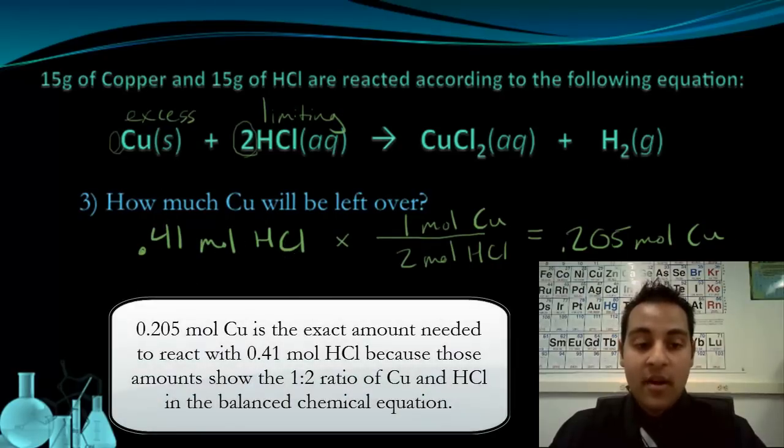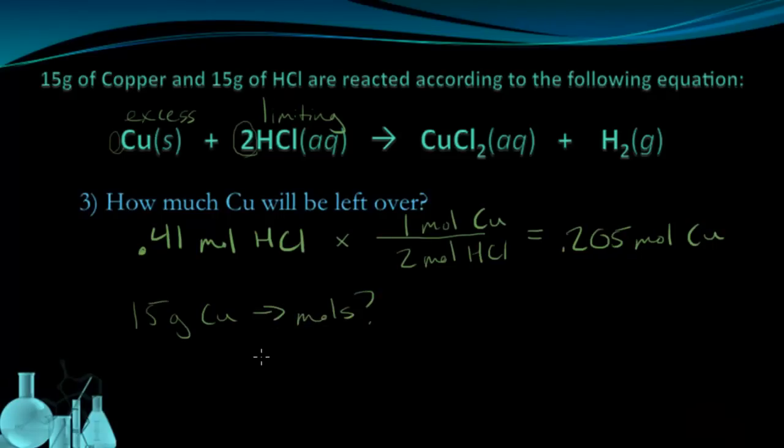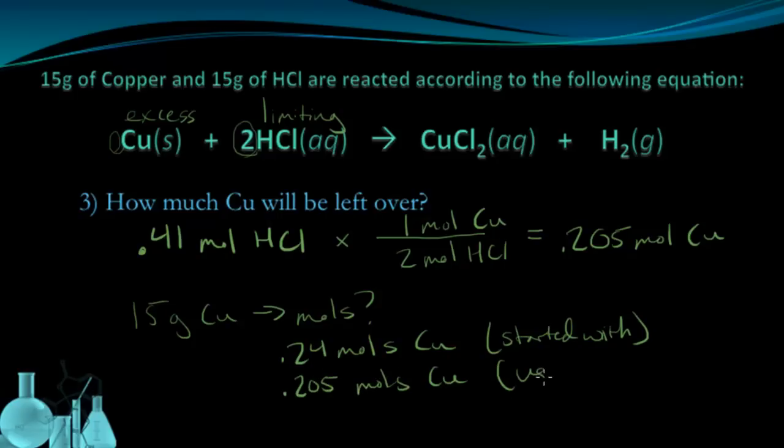This tells me I would need 0.205 moles of copper is what's going to react with the HCl. But how much did I start with? I started with 15 grams of copper. So let's change that into moles. We actually looked at this in the first problem, so this 15 grams of copper is actually 0.24 moles of copper. This is how much I started with. And I also know that I had to use up 0.205 moles in the reaction. From this point, it's a simple subtraction to figure out that 0.035 moles of copper is left over.